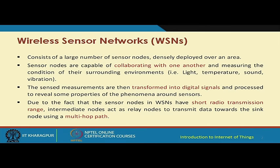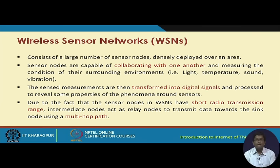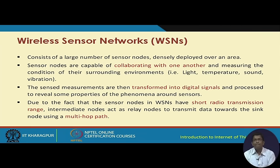In a sensor network, every sensor node has a sensing unit that senses particular physical phenomena it is supposed to sense. A temperature sensor senses temperature fluctuations, a humidity sensor senses humidity fluctuations, a camera sensor takes images, a vibration sensor senses vibration, and a light sensor senses illumination conditions. Each node senses locally.